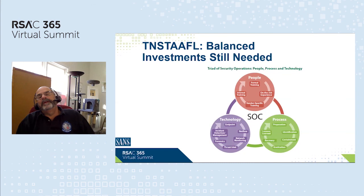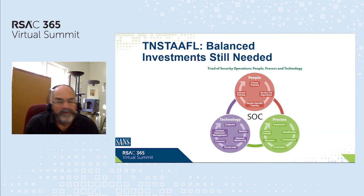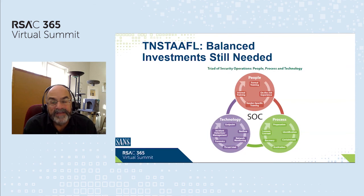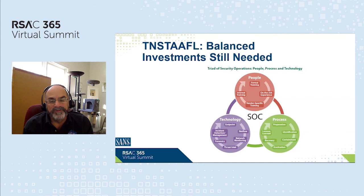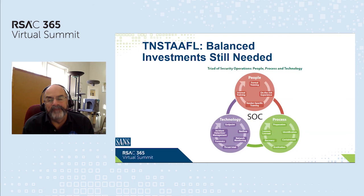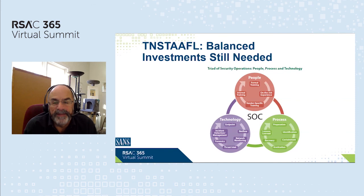Bottom line: there's still no such thing as a free lunch. The triad of first having smart, skilled people who can develop and document useful and adaptable processes to get ahead of the bad guys — or at least keep even — and then implementing those processes using technology as a force multiplier for those scarce humans: those three things together underlie every success story we've ever had in cybersecurity. In the SANS What Works program we highlight these stories, and it's always a mix of all three — people, process, and technology — that leads to the aha moment where you can demonstrate to management: 'You saw who got hit by this in the news — we didn't get hit because here's what we were doing.'